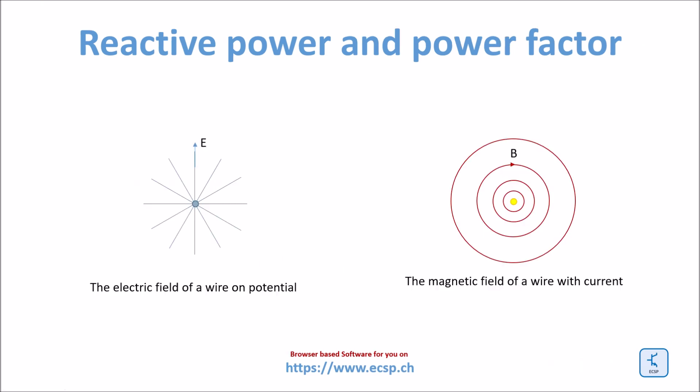The root cause of reactive power is due to the fact that any conductor on potential is surrounded by an electric field and any wire conducting a current is surrounded by a magnetic field. Both the electric and the magnetic field store energy and thus it needs power to build up these fields.